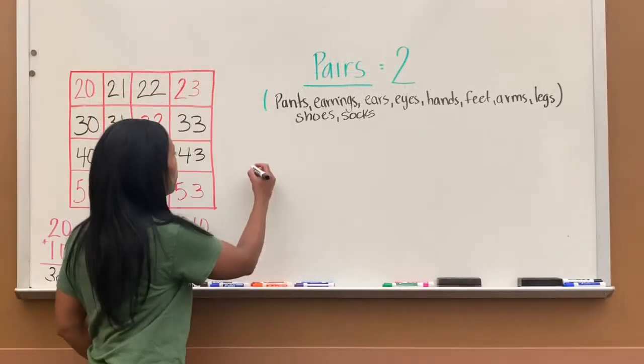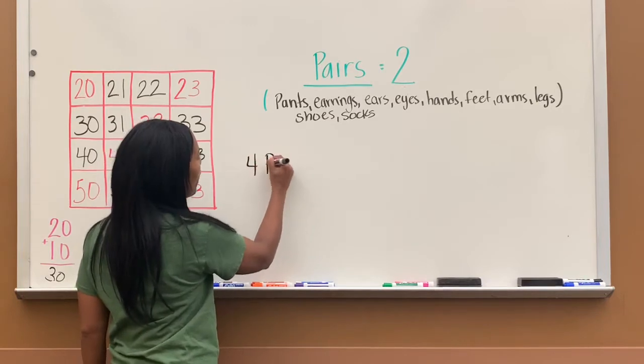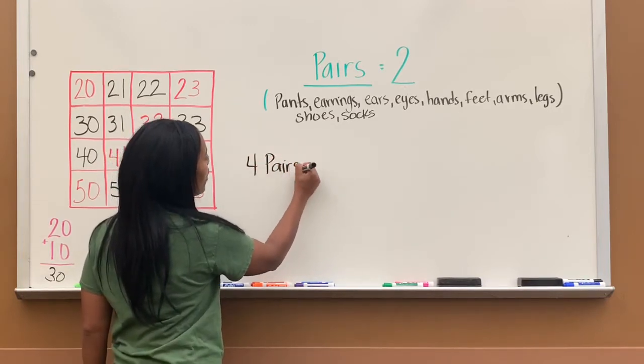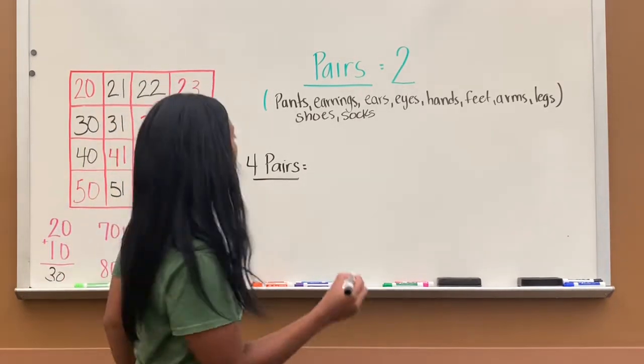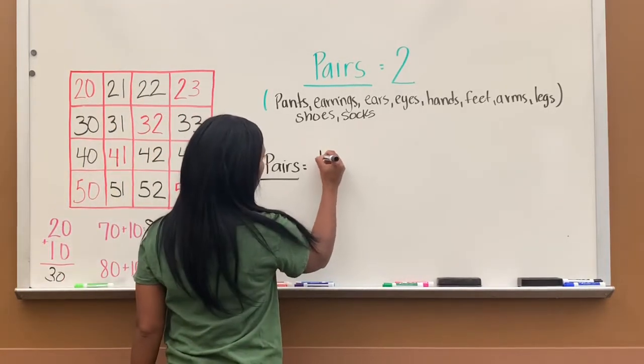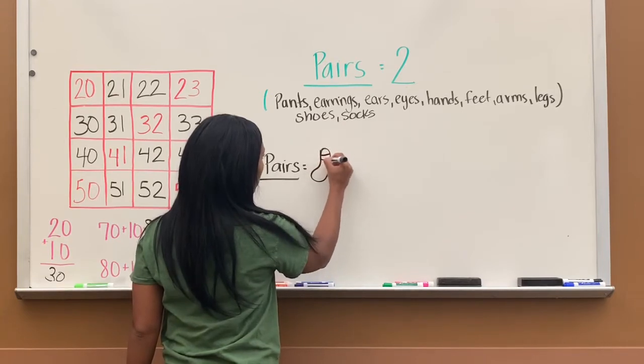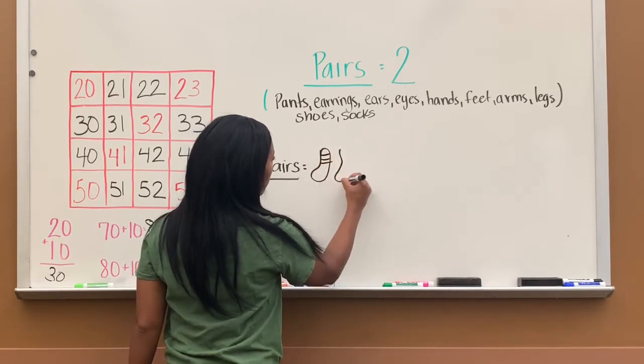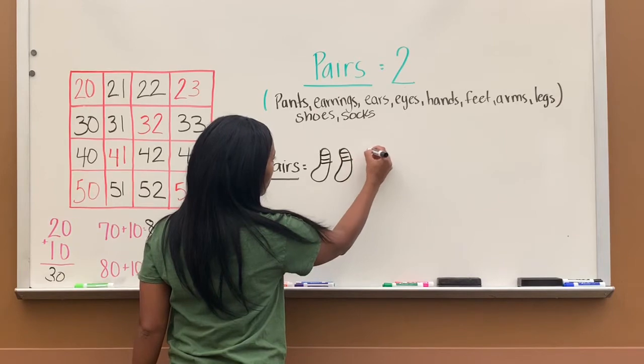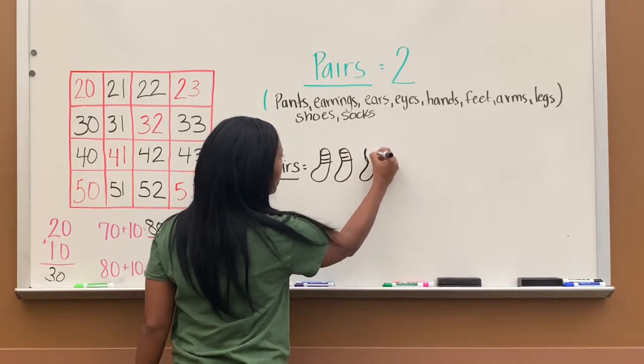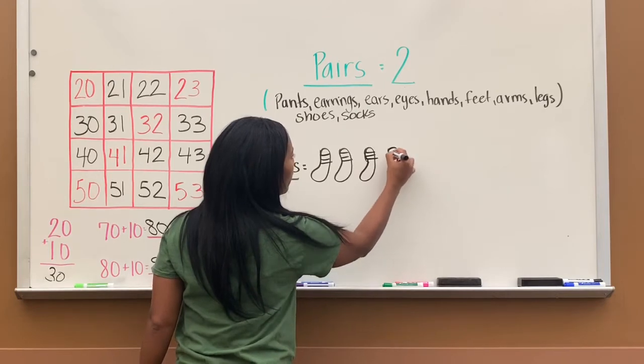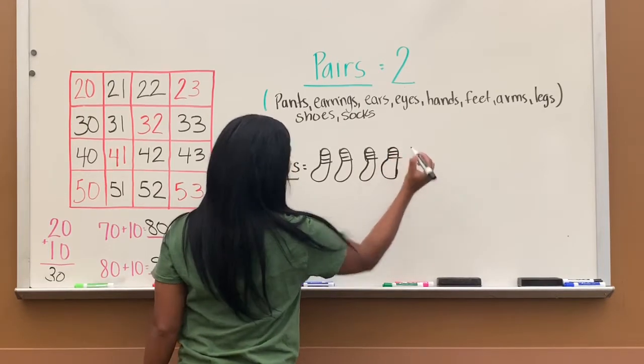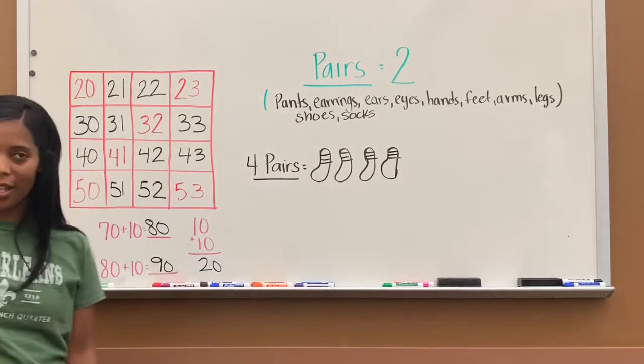So what we're going to do is draw four pairs of socks. Let's do four pairs of socks. So we're going to go ahead and draw our four pairs of socks. I'm not an artist, guys. This looks like a bowling pin, but we're going to call it a sock. Alright. So that's my four pairs of socks.